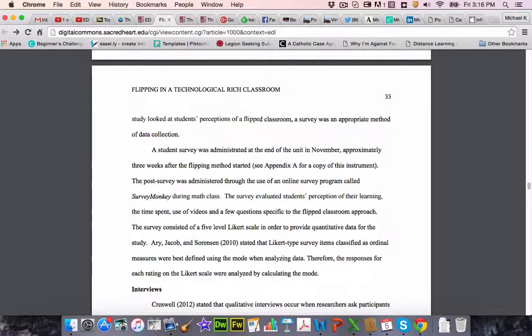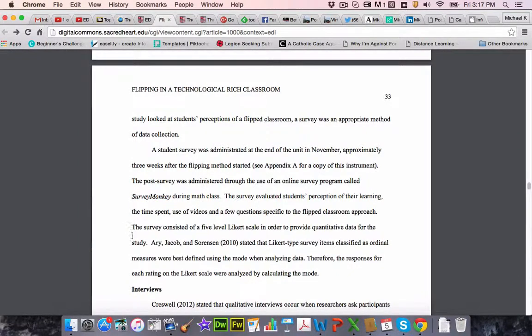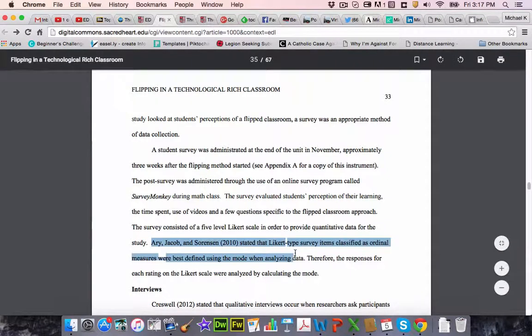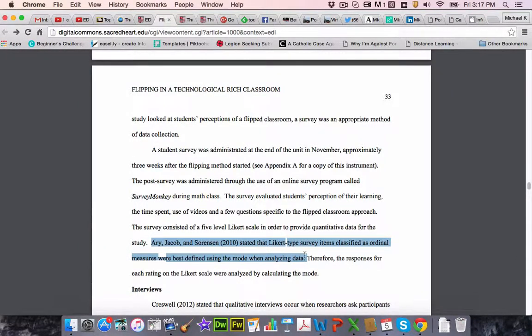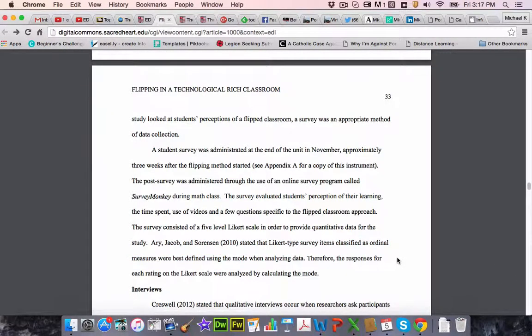So you can see in the appendices, appendix A, he includes a copy of the survey. He used a post-survey, so he did it after he did the flipped classroom model. He used SurveyMonkey as a way to deliver it, so he did it online. He talks a little bit about what it included. He also provides a bit of a rationale for why he did it that way. So this group of authors here recommended that Likert style was useful for this type of data. So that's what he picked and why he picked it.